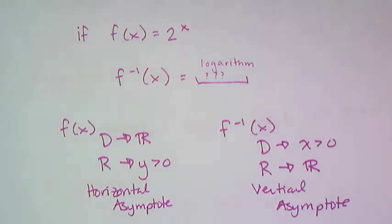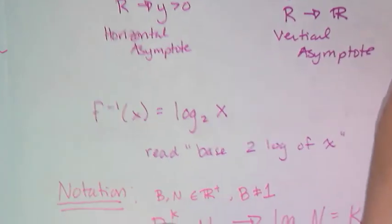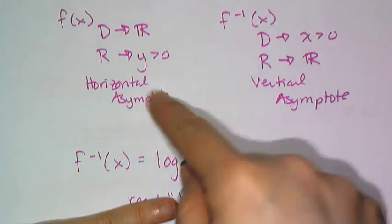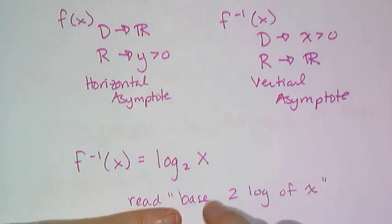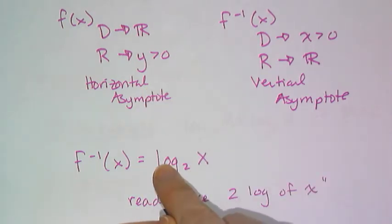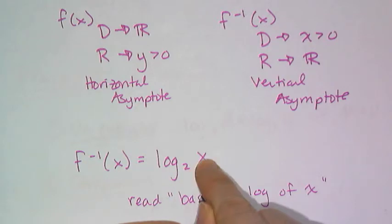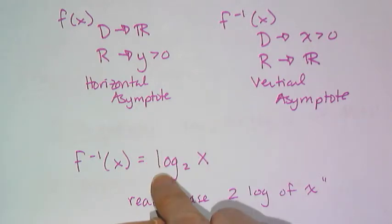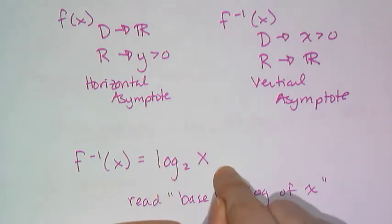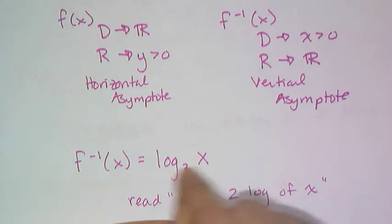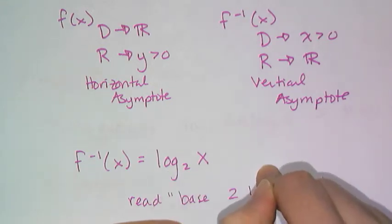Here's the notation for the logarithm. The inverse function specifically for this f(x) that was 2 to the x power is log with a little subscript 2 of x. We read this two ways: you can either read it as base 2 log of x, or log base 2 of x.